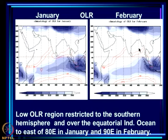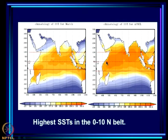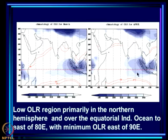In March and April, everything has warmed up — there are very high temperatures, with the sun having moved over and then slightly north of the equator by April. This produces a large body of very warm water. The low OLR region, however, still occupies only a small fraction of the warm ocean, restricted to the eastern part — though it has now stretched across the equator into the northern hemisphere, whereas in January–February it was confined to the southern hemisphere.